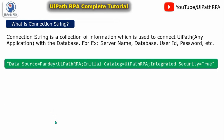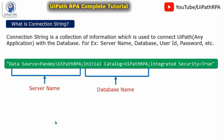This is the connection string which you have generated after using the connect activity. This line — data source equal to pundes-less-UiPath-RPA — this is called the server name. Because you have seen in the SQL Server Management Studio, the server name is pundes-less-UiPath-RPA. And this line, initial catalog equal to UiPath RPA — this is the database name.